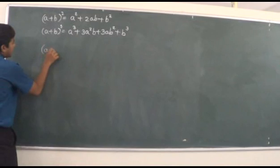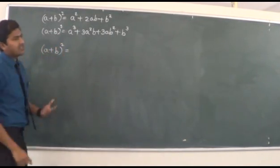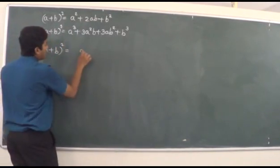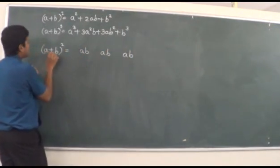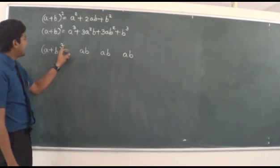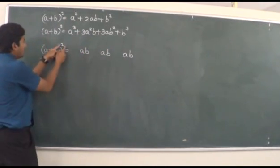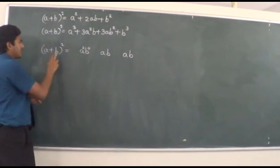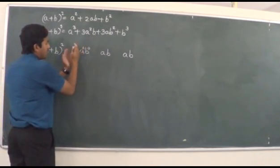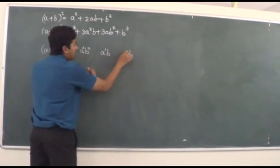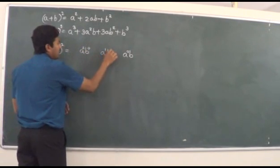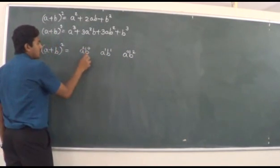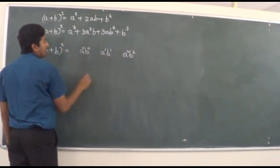If we are considering (a+b)², as mentioned, the exponent is 2 so we get 3 terms. We write both terms — ab, ab, ab — three times. Power 2 is given to the first term a, and 0th power is given to the second term b. We then reduce a's power by 1 each time to get 2, 1, 0, and increase b's power by 1 each time to get 0, 1, 2. This gives us a², ab, b².